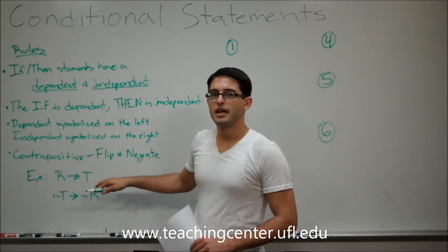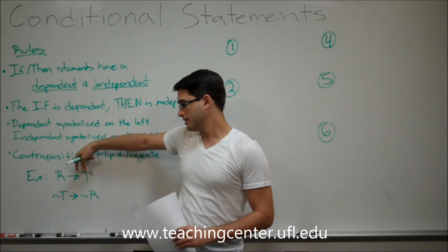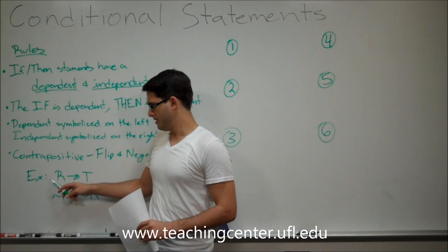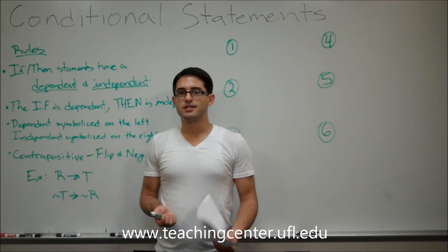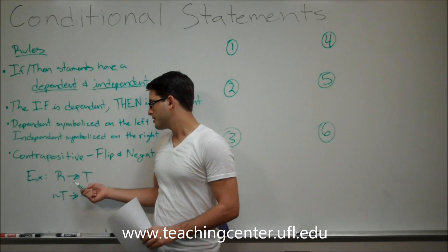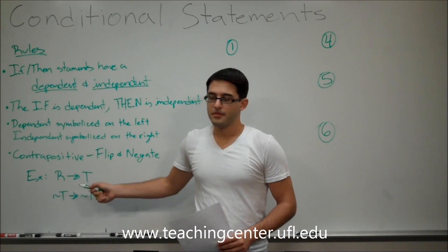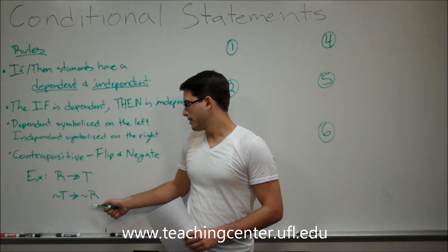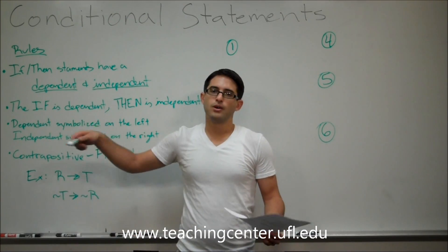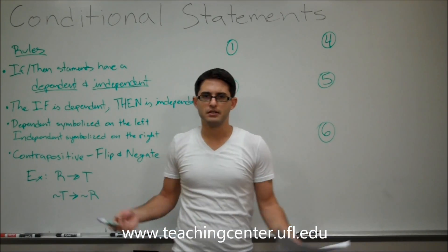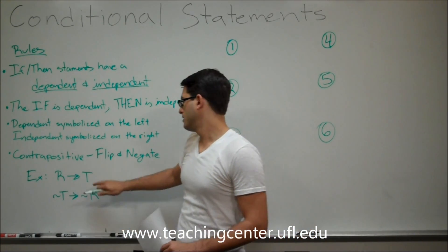Every statement has a contrapositive, which is a way of extracting more information from the statement. What you do is flip both sides of the statement and negate them. For instance, if this is our statement — if R, then T — the contrapositive would be: if not T, then not R. To give you an example applicable to an actual game: if R is in team 4, then T is in team 4. You can also get the contrapositive and figure out that if T is not in team 4, then R is not in team 4. So, a contrapositive is a good way of getting more information out of one of the statements.